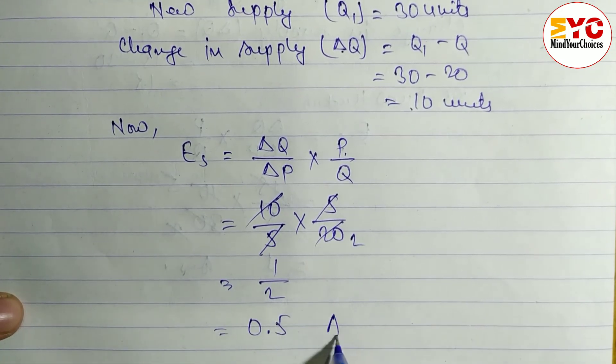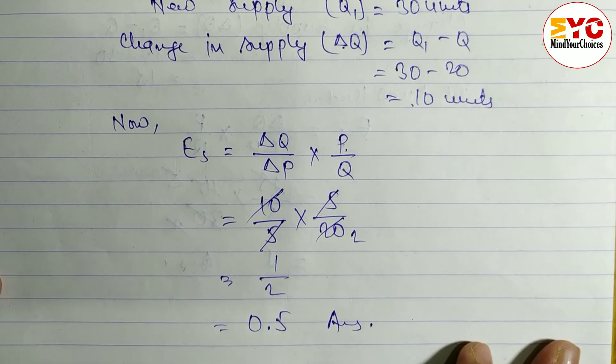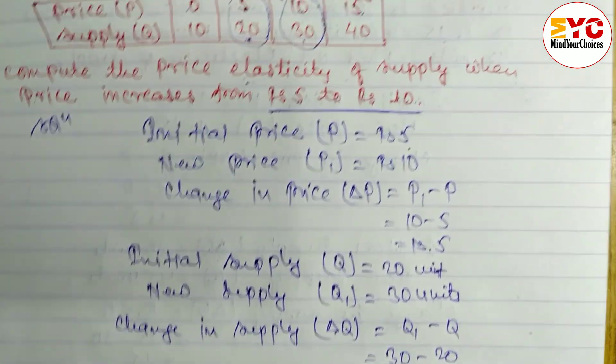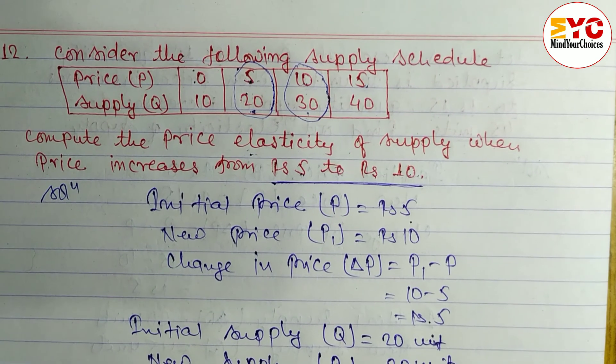So price elasticity of supply is 0.5. I hope you understand this problem related with price elasticity of supply.